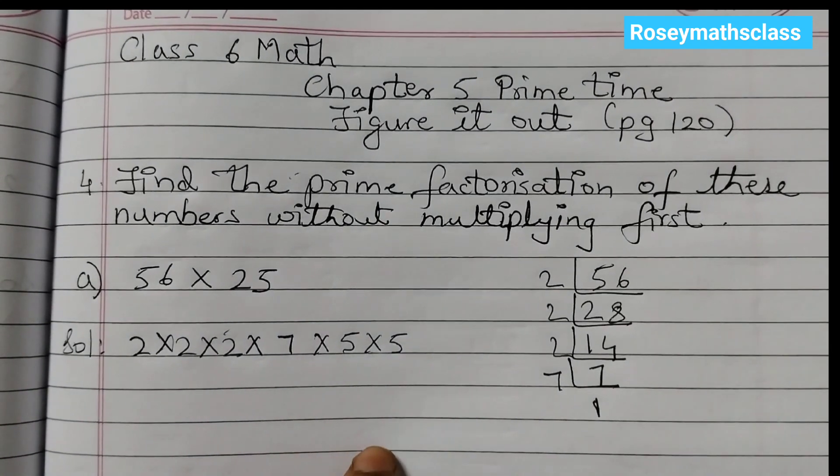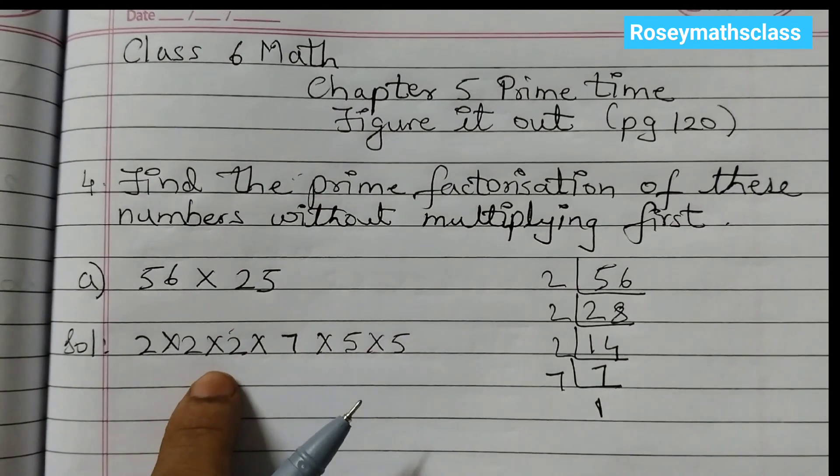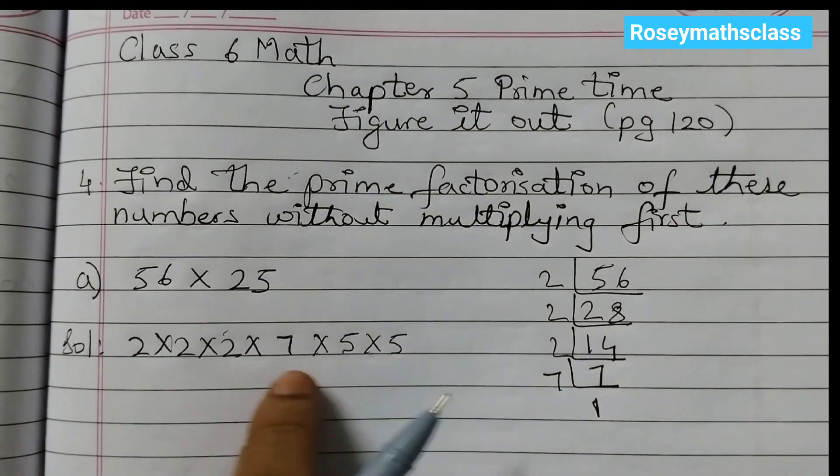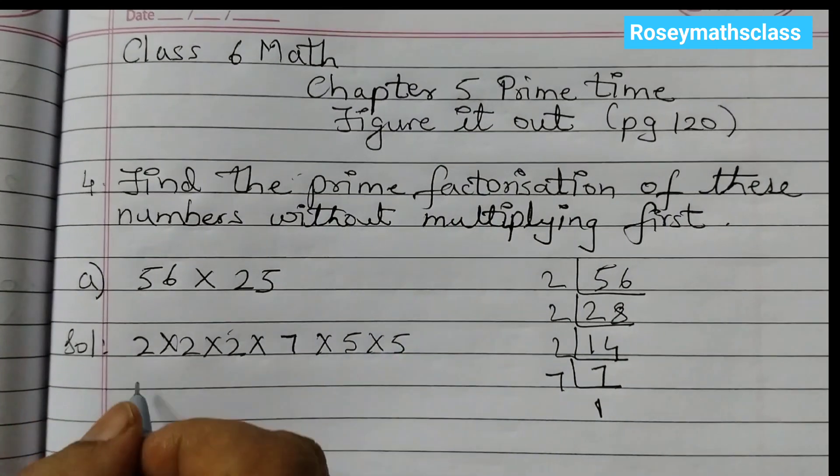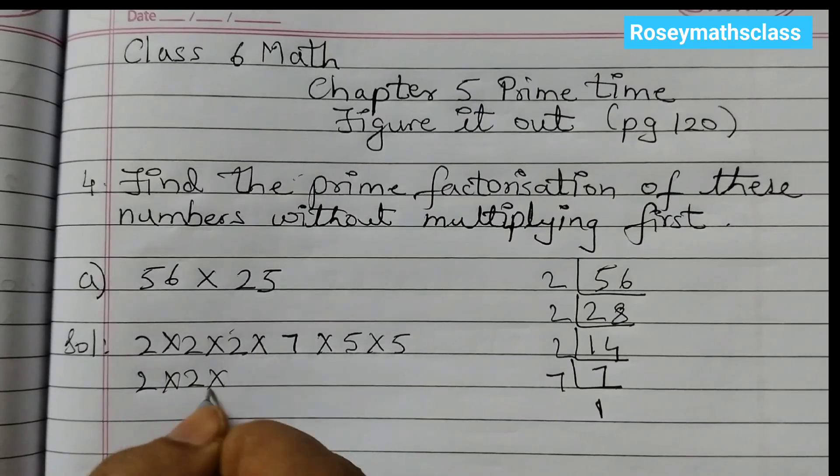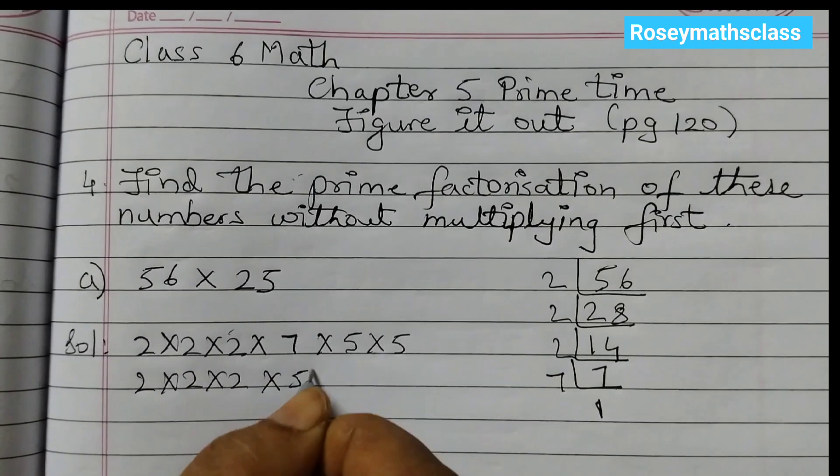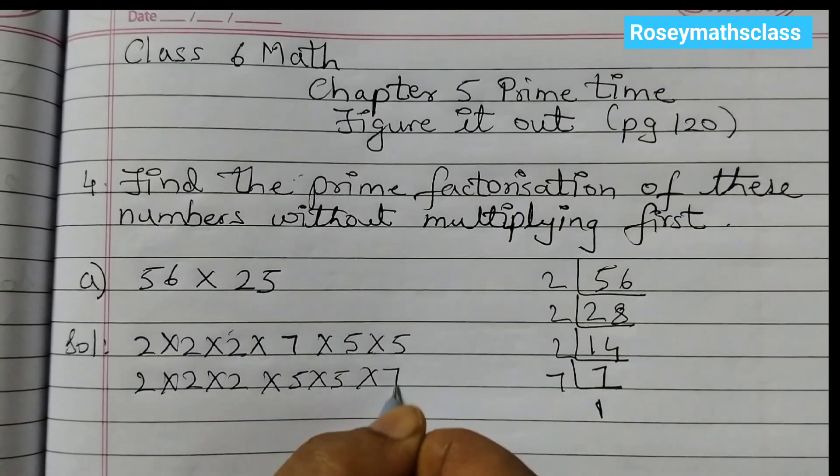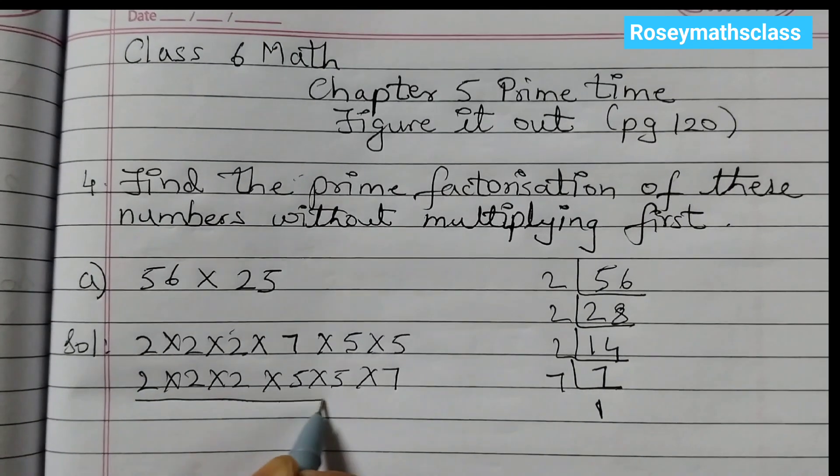Now just rearrange it so that you have the smaller number, then the next bigger number, and then the biggest number. So we will rearrange it: 2 into 2 into 2 into 5 into 5 into 7. This is how you need to write your answer.